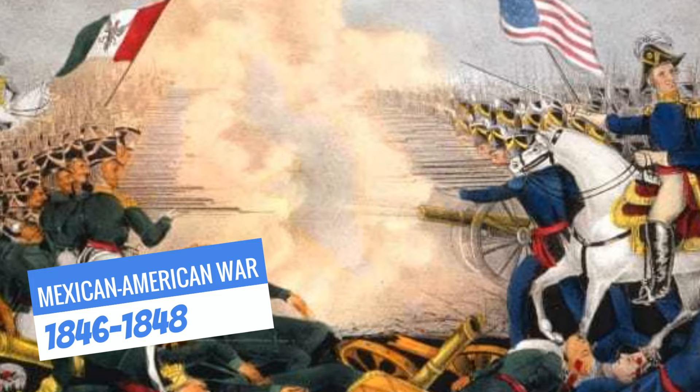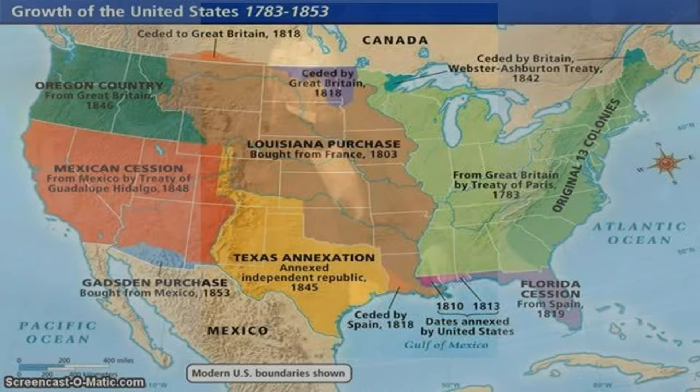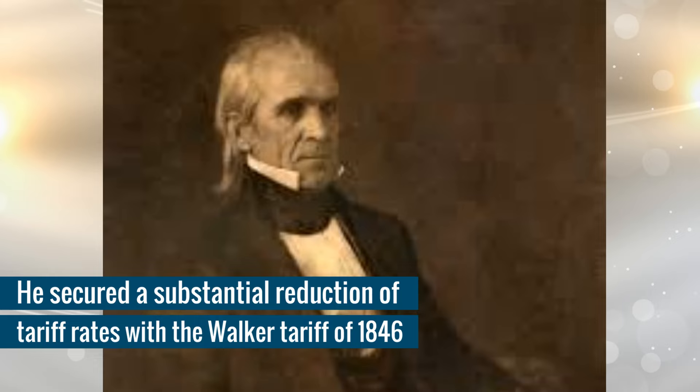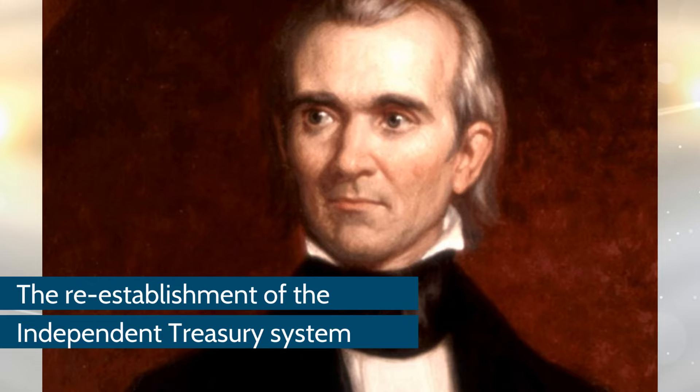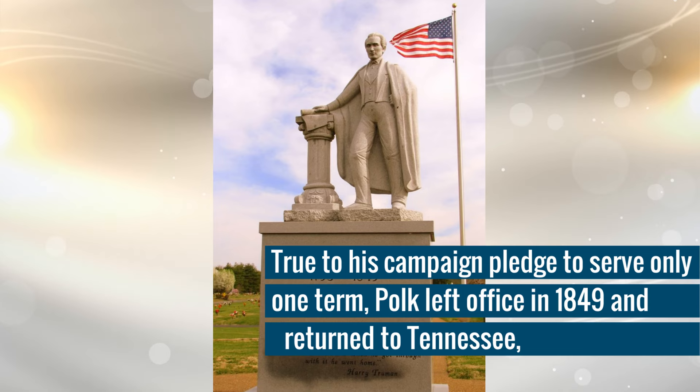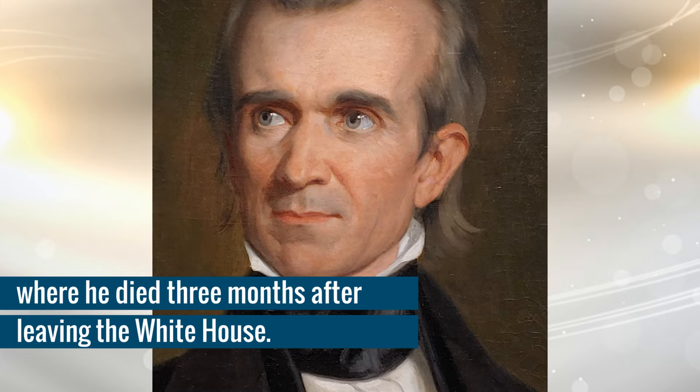During his presidency, the United States expanded significantly with the annexation of the Republic of Texas, the Oregon Territory, and the Mexican Cession following American victory in the Mexican-American War. He secured a substantial reduction of tariff rates with the Volcker Tariff of 1846. The same year, he achieved his other major goal, the re-establishment of the independent treasury system. True to his campaign pledge to serve only one term, Polk left office in 1849 and returned to Tennessee, where he died three months after leaving the White House.